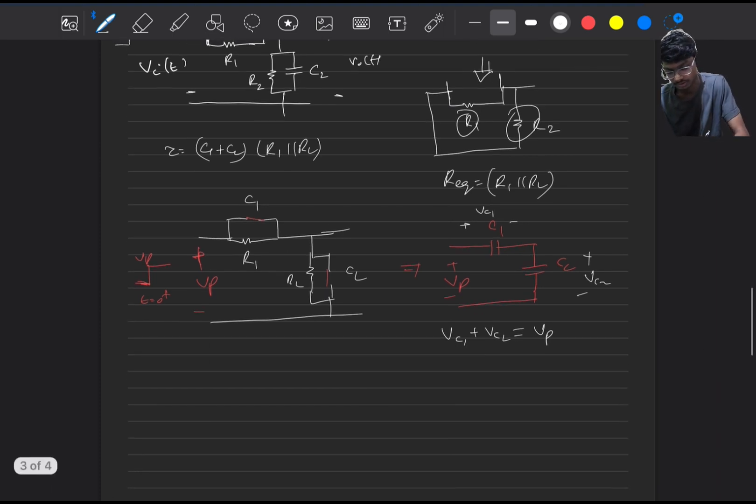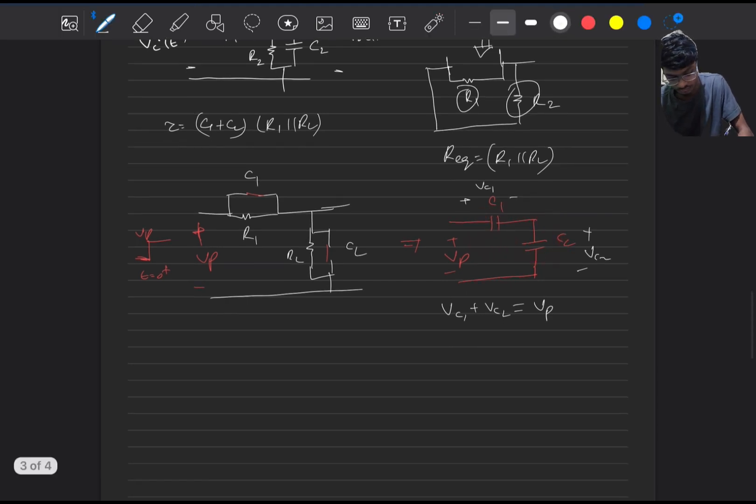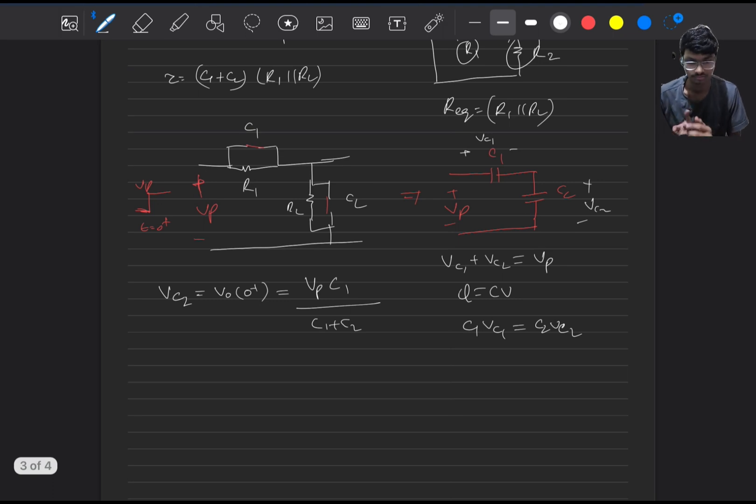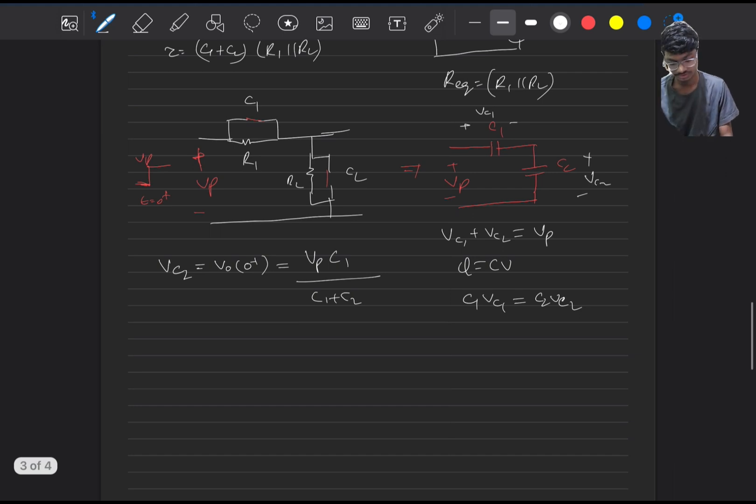Now also one more thing. As these two are in series, the charge will be same across them. And what is the formula of charge? Q equals CV. Hence C1 VC1 equals C2 VC2. Now from these two equations, if we solve these, we will get to know that VC2 which is our output voltage equals Vp into C1 divided by C1 plus C2. You can just easily remember this like the current division rule.